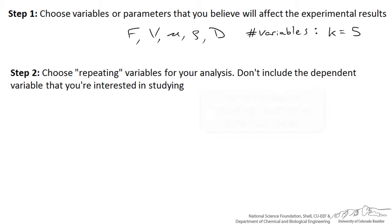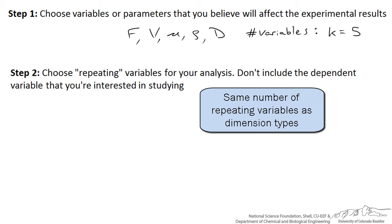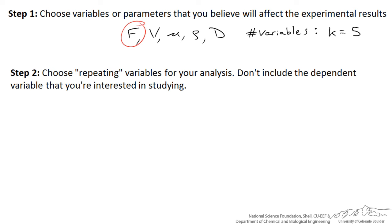The second step is to choose what are known as repeating variables for the analysis. When you select these variables, don't include the dependent variable, which in this case is the force of drag. So we can choose whatever we want — let's choose the diameter of the sphere, the velocity of the fluid, and the fluid density as our repeating variables.